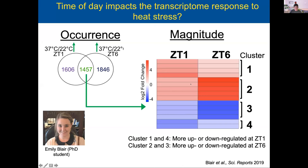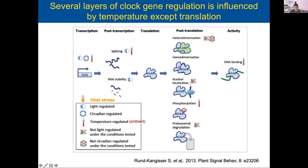We wanted to pursue this further and look at other levels of gene regulation. We knew from many studies that temperature impacts different levels of clock gene expression: ambient temperature plays a role in transcription of clock genes, in splicing, phosphorylation, and the ability of these proteins to bind to their target genes in DNA binding. The area where we didn't have a lot of information was at the translation level, and also outside the range of ambient temperature — when looking at more extreme temperatures such as heat stress.